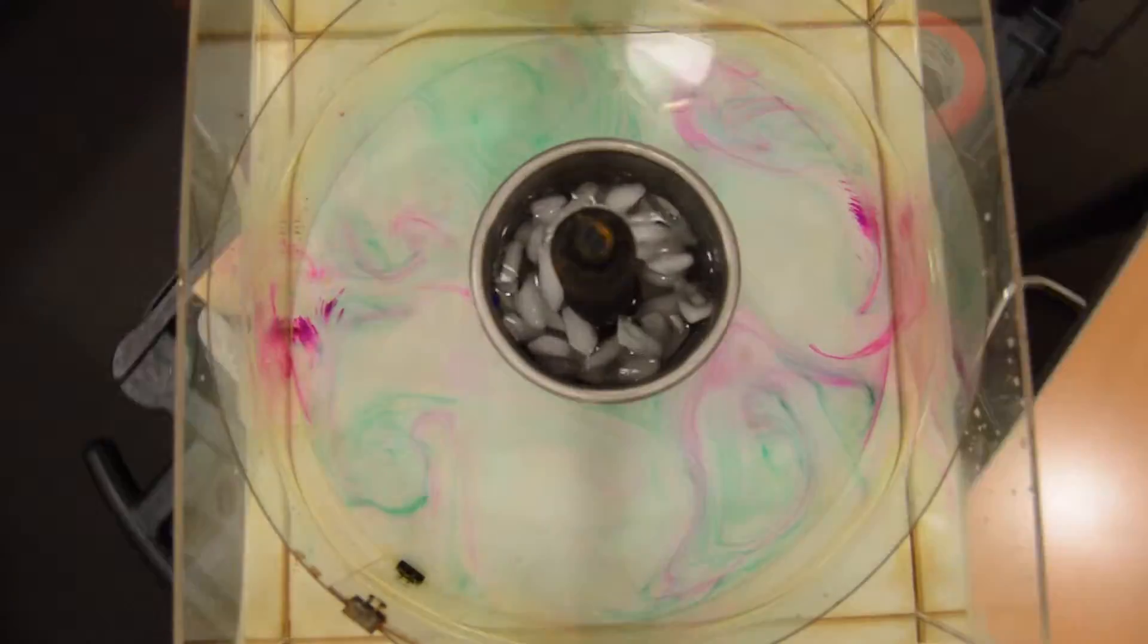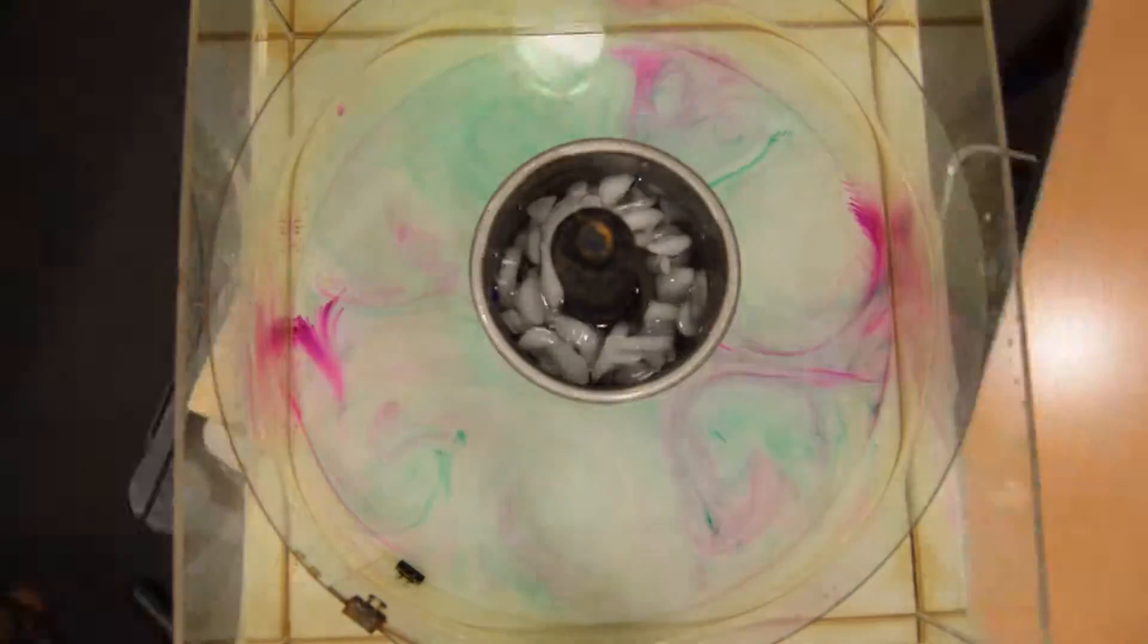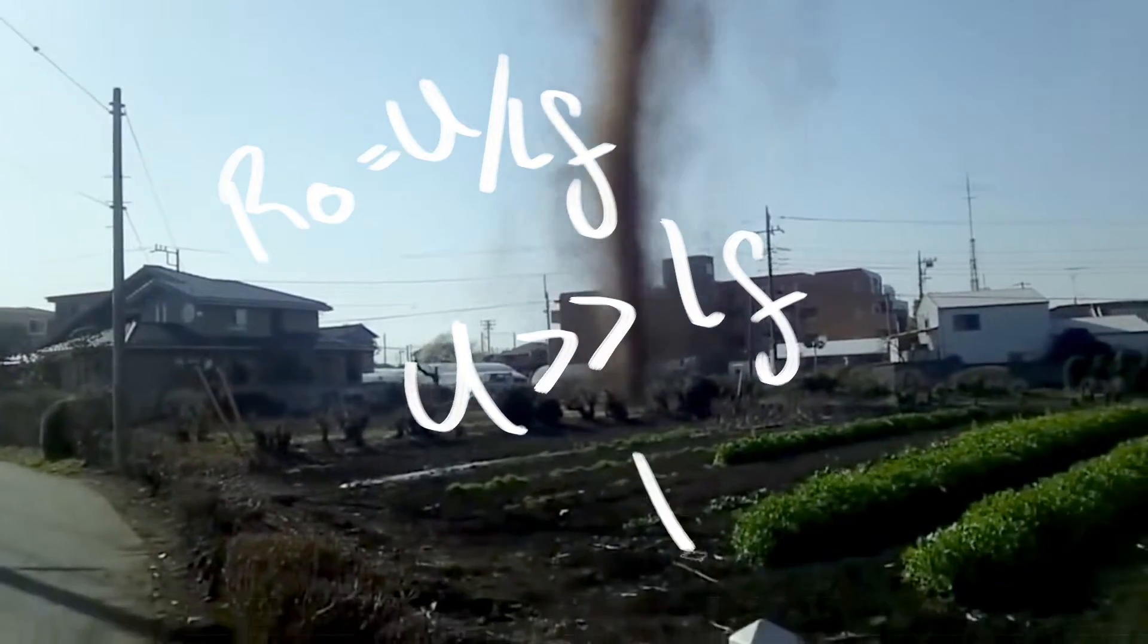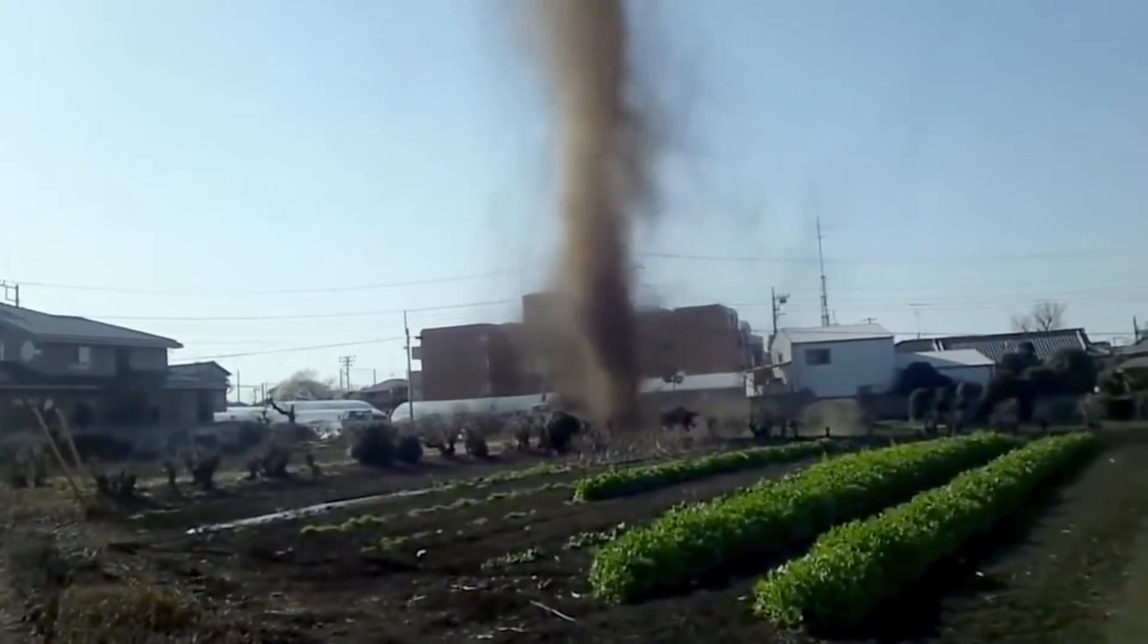A large Rossby number tells us that the inertial and centrifugal forces dominate, and this can be in the case of a small length scale or a large velocity. For example, in a tornado. Wait, are you just reading from Wikipedia? No.